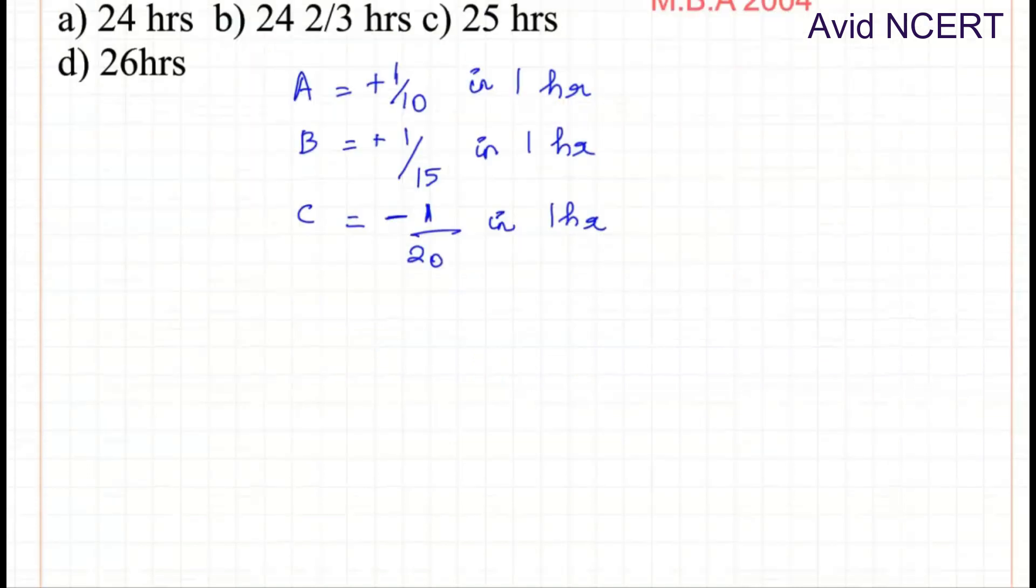So in total 3 hours, the amount of tank filled is 1/10 plus 1/15 minus 1/20. The LCM for 10, 15 and 20 is 60. So 10 times 6 is 60, 6 times 1 is 6, plus 15 times 4 is 60, 4 times 1 is 4, minus 20 times 3 is 60, 3 times 1 is 3. So 6 plus 4 is 10 minus 3 is 7/60.